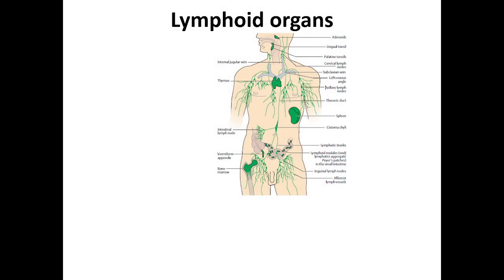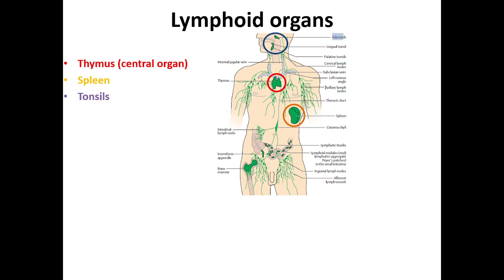Lymphoid organs: first of all, the thymus, which is a central lymphoid organ. Then the most large lymphoid organ, the spleen. Then a group of tonsils: first of all, adenoids, lingual tonsils, and palatine tonsils.